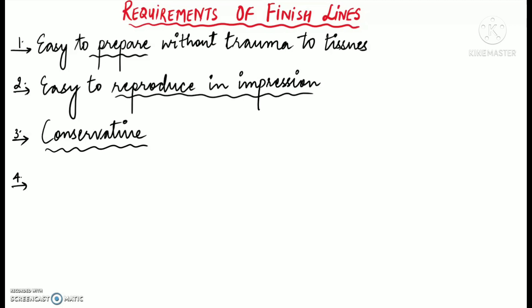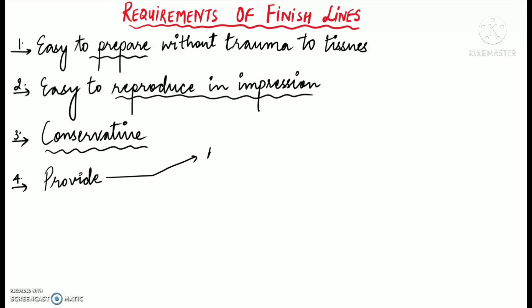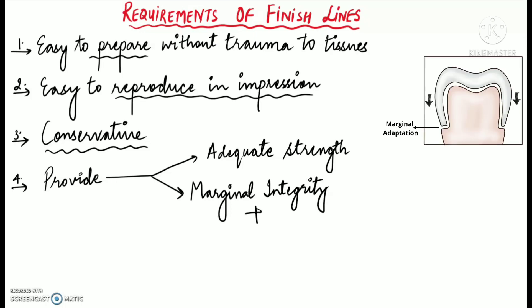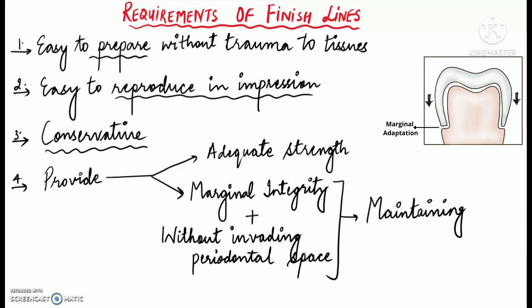It should be conservative, of course. It should not result in excessive tooth reduction unless it is absolutely required. Also, the finish line design should be such that it provides adequate strength to the restoring material. Finish line should provide adequate marginal integrity to the restoration without invading the periodontal tissues, or we can say without invading the periodontal biological space, and thus maintaining the soft tissue health.